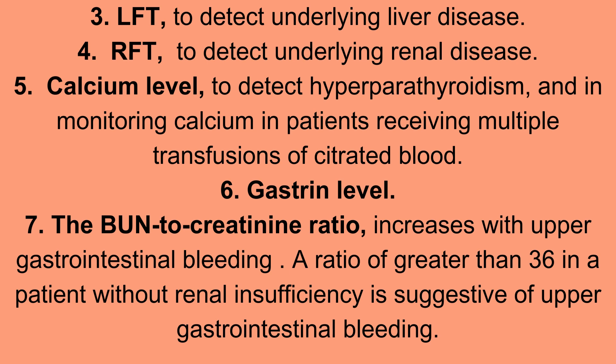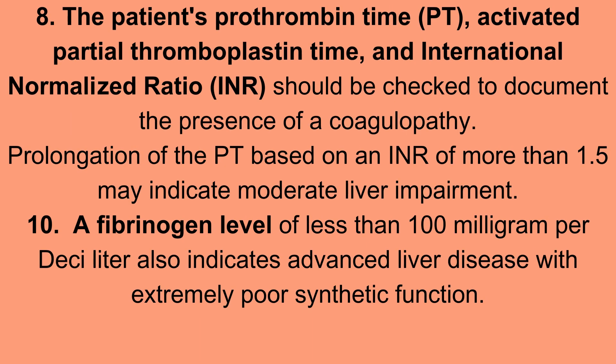Number six: gastrin level. Number seven: the BUN-to-creatinine ratio increases with upper gastrointestinal bleeding. A ratio greater than 36 in a patient without renal insufficiency is suggestive of upper gastrointestinal bleeding. Number eight: the patient's prothrombin time (PT), activated partial thromboplastin time, and international normalized ratio (INR) should be checked to document the presence of a coagulopathy.